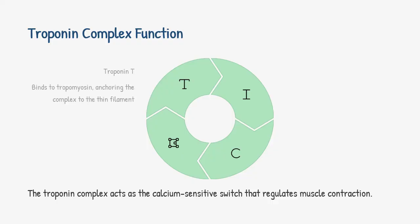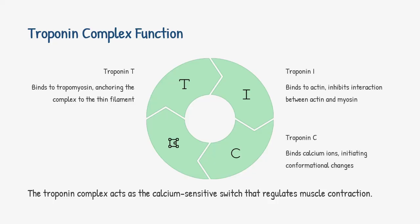Let's break down troponin's roles. Troponin T secures the complex to tropomyosin. Troponin I keeps actin and myosin apart. And troponin C is your calcium sensor — when calcium binds here, it triggers a structural shift, allowing contraction to begin.